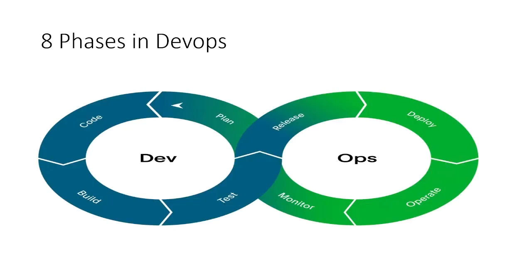We have eight main phases in DevOps, which are: plan, code, build, test, release, deploy, operate, and monitor.